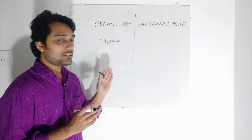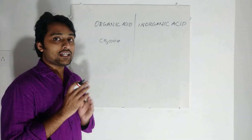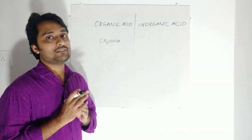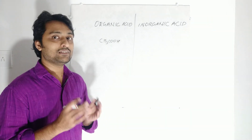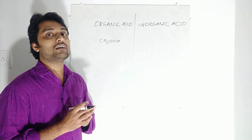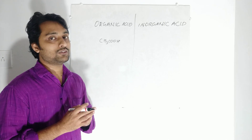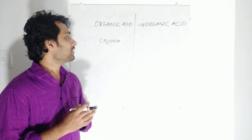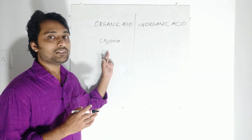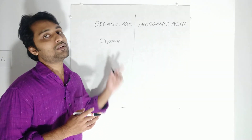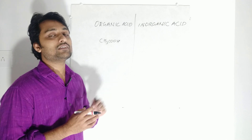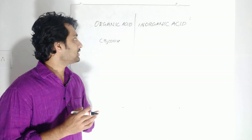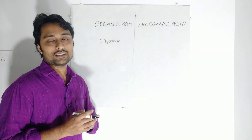So how can we understand whether it is an organic acid? It is very simple — we just want to check whether carbon is present in the formula. If carbon is there, then we can understand that it is an organic acid.